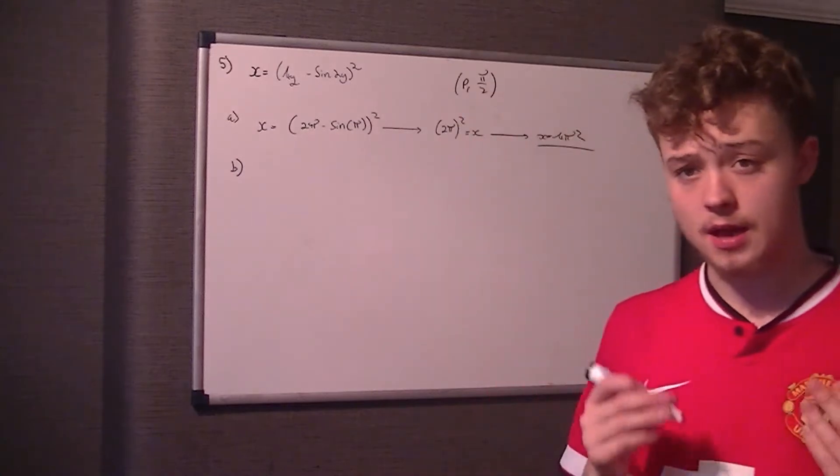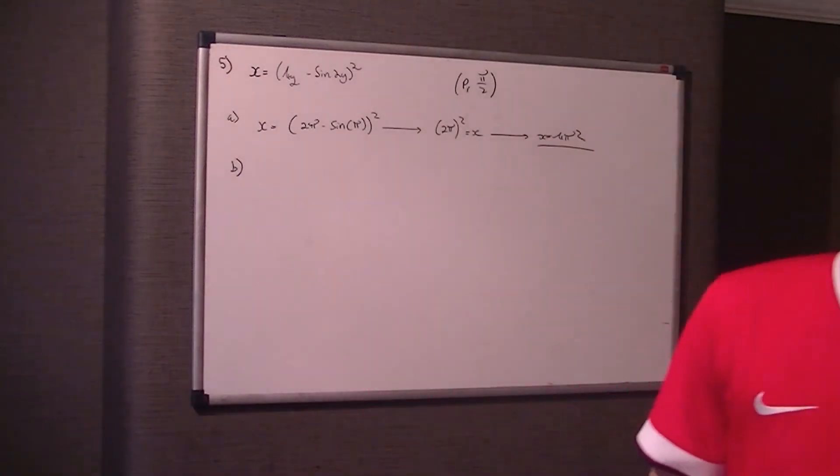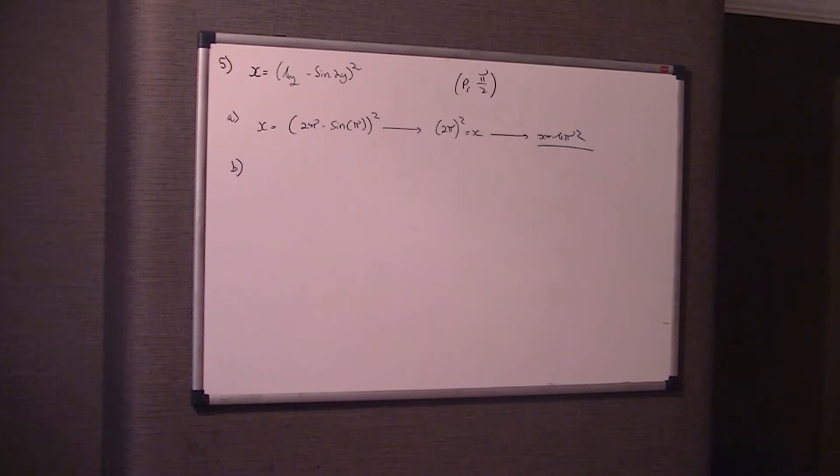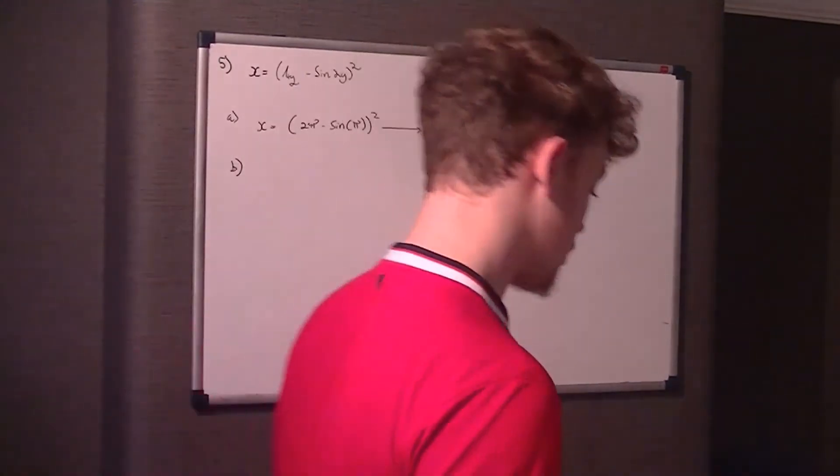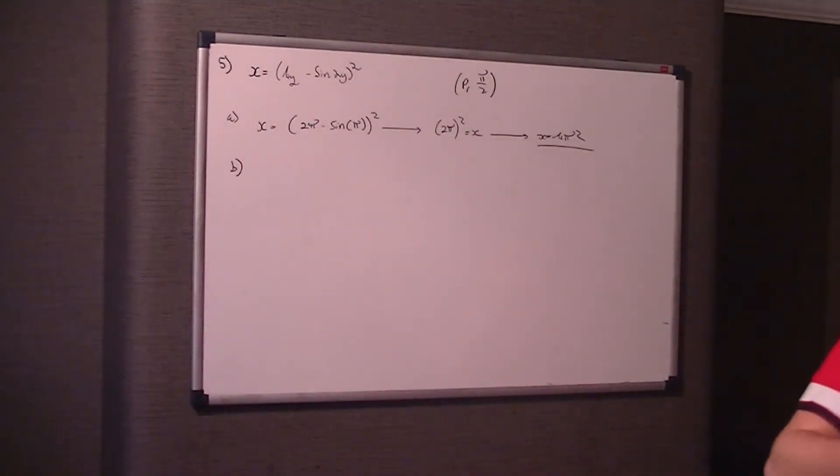Part B. It says, find the equation of the tangent to the curve. The tangent cuts the curve at p and the y-axis at point A. Use the coordinates, use calculus to find part A. So the first thing we've got to do is find some equations of the tangent to the curve at p.